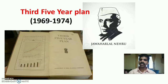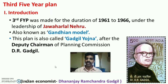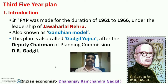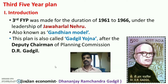Today's session covers the Third Five-Year Plan. The period is 1961 to 1966, under the leadership of Jawaharlal Nehru, then Prime Minister of India. The Third Five-Year Plan is also known as the Gandhian Model. It is also called Gadgil Yojana, in memory of Deputy Chairman of Planning Commission Dr. D.R. Gadgil — Dhananjay Ramachandra Gadgil, an Indian economist.